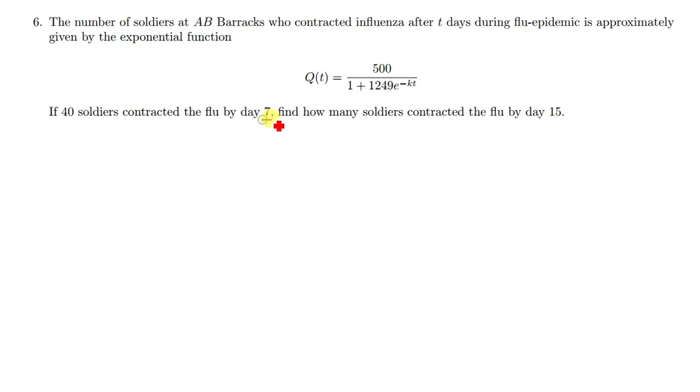So in seven days, 40 soldiers contracted the flu, meaning where there is t we put 7, and where there is Q(t) we put 40. Then we make k the subject of the formula. Once we find k, it will be easier for us to find the number of soldiers that contracted flu on day 15.